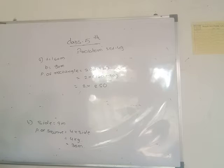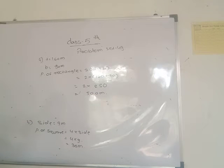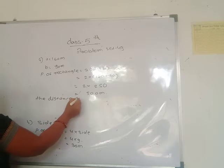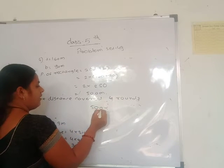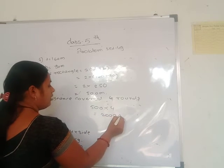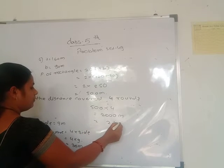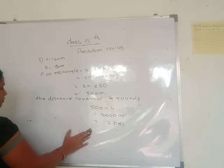250 × 2 = 500 meter. But here we take 4 rounds around the field. Distance covered in 4 rounds = 500 × 4 = 2,000 meter. To write the answer in kilometers, 2,000 meter = 2 kilometer. He should walk 2 kilometer.